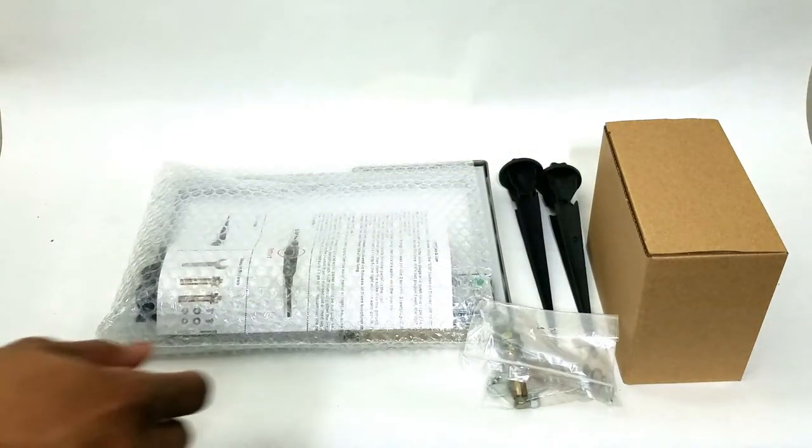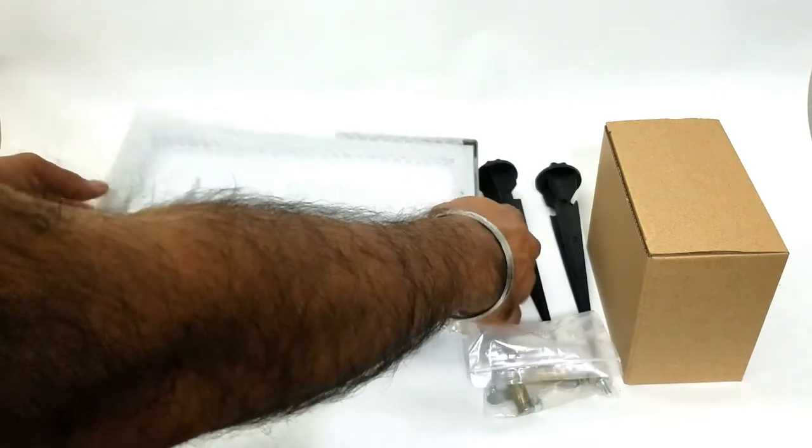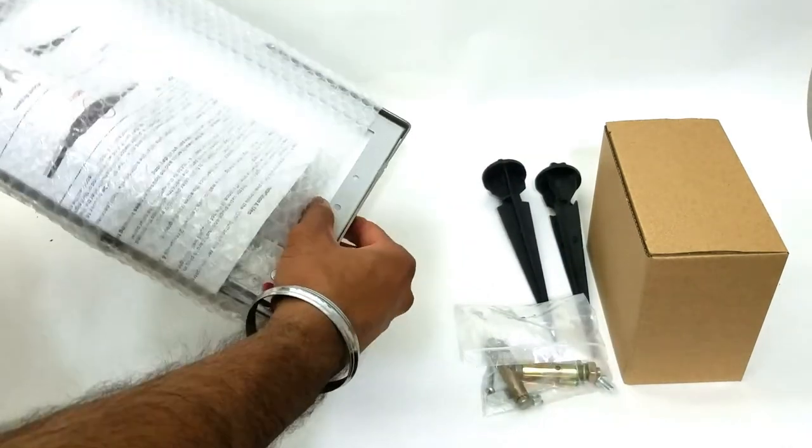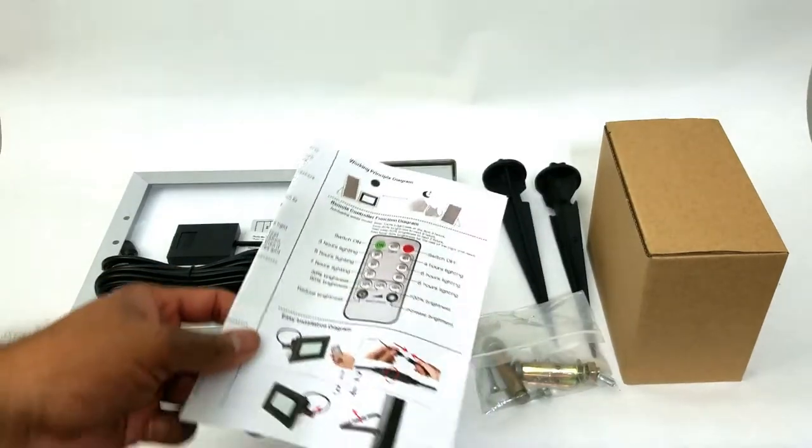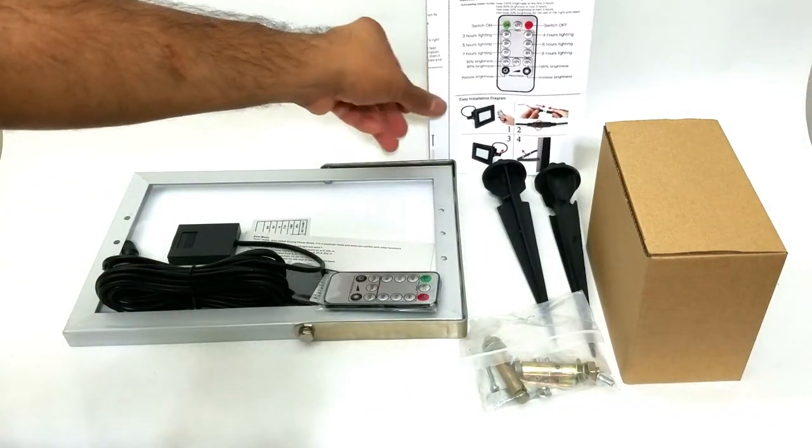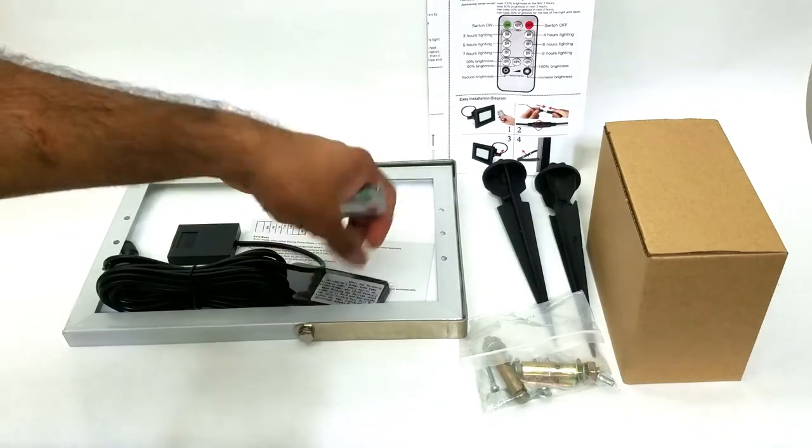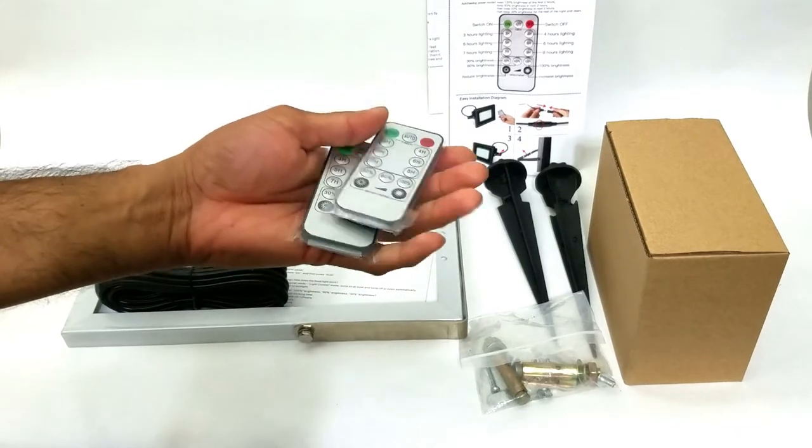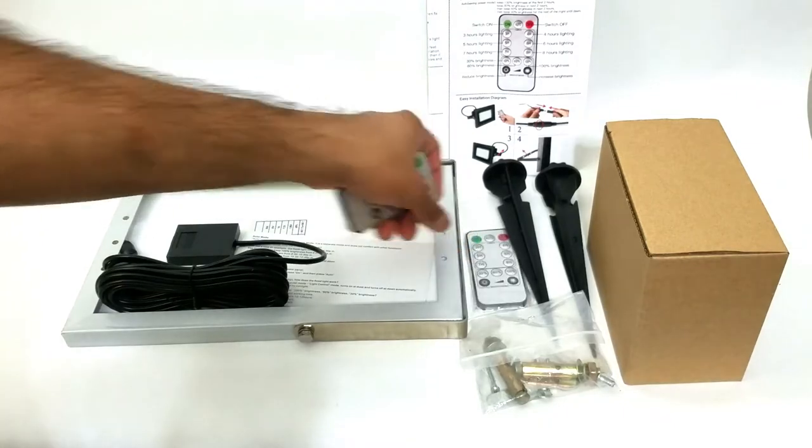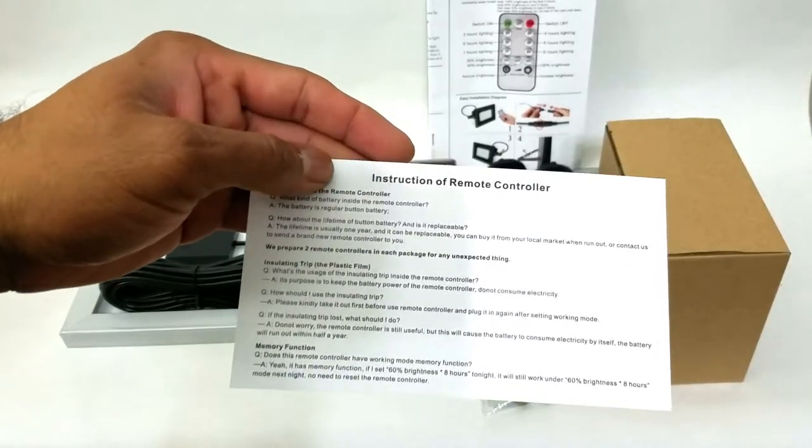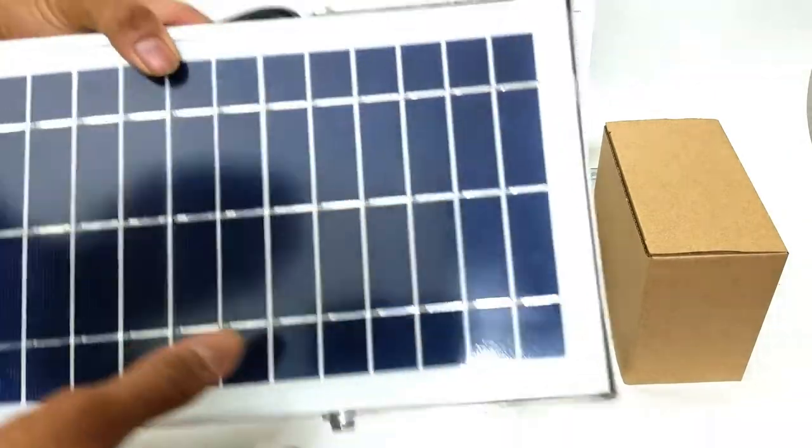Now continuing along with the unpacking, we have the instruction manual. We have not one but two remotes, so if you run out of battery on one you still have the second one that you can use. You have the instruction for the remote control.